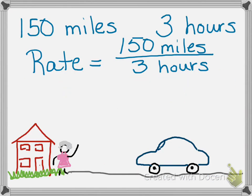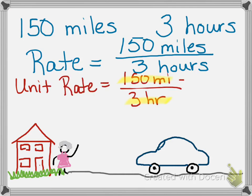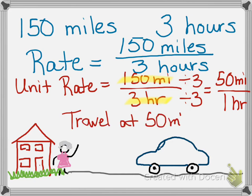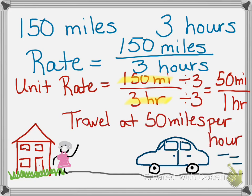Let's go back to Grandma's house. Instead of finding the rate, I want to find the unit rate. I'll set up my problem: 150 miles over three hours. Then I'm going to divide the top and the bottom by three — three is my bottom number. When I do that I get 50 miles on the top and one hour on the bottom. That tells me I need to go at a unit rate, a speed of 50 miles per hour. So I've divided by the bottom number to get my unit rate of 50 miles per hour.